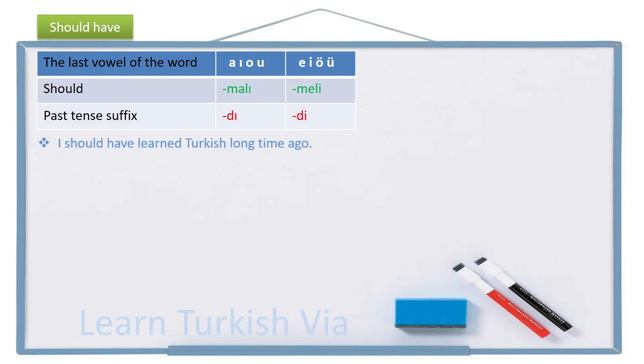I should have learned Turkish long time ago. So, this is in the past and obviously I didn't do it and I regret about it. So, let's try to translate this. I, ben, long time ago, long, uzun, time, zaman, ago, önce, before, önce.